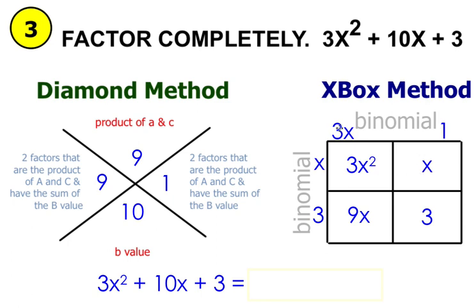So we have our binomial 3x plus 1 on the top. And we have our binomial x plus 3 on the bottom. So when you write it in factored form, it looks like that.